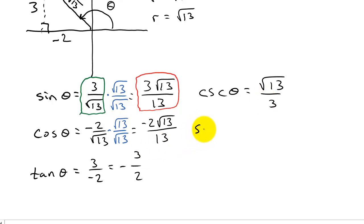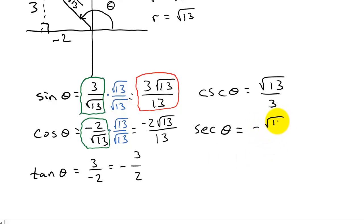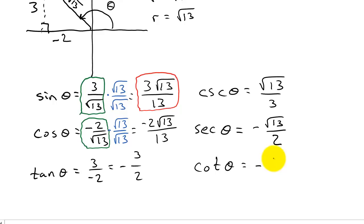For secant theta, similarly take the reciprocal of -2/√13 before rationalizing, giving -√13/2. So secant theta = -√13/2. For cotangent theta, since tangent = -3/2 has no radical, just take its reciprocal: cotangent theta = -2/3.